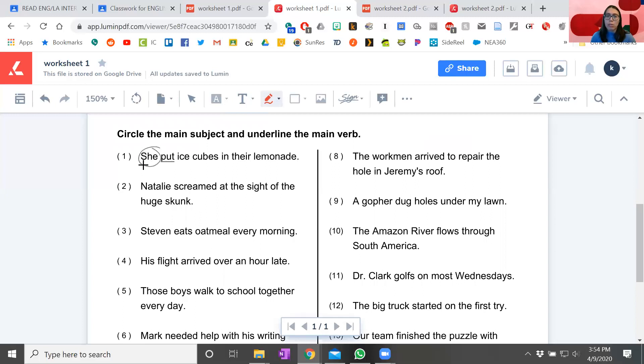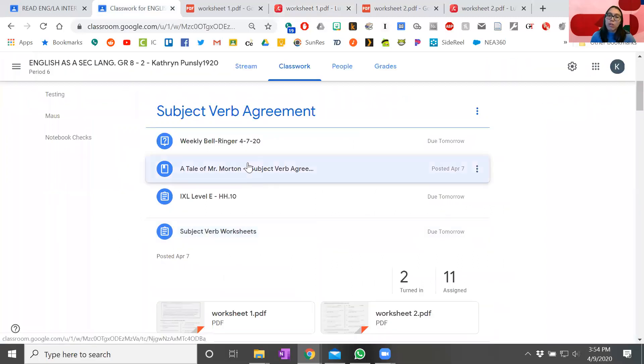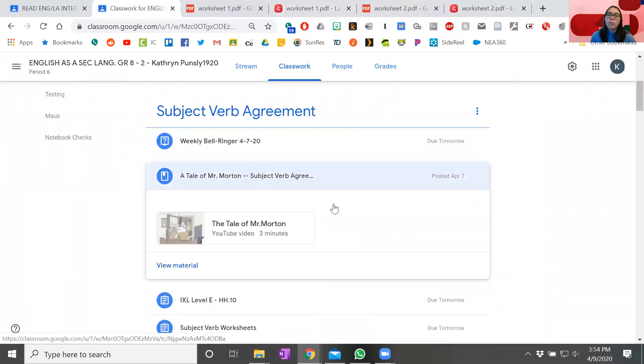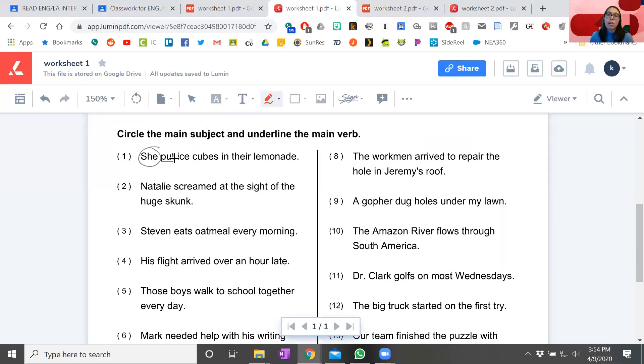So let's look at this example. She, that's the person who did it. Put, that's what she did, ice cubes and lemonade. And so if you remember what it said in the Mr. Morton video, first we're figuring out the who in the video, it was Mr. Morton. And then we're figuring out the what, what did they do? And in the video, Mr. Morton, he walked and he talked. So we're going to do the same thing for these examples.